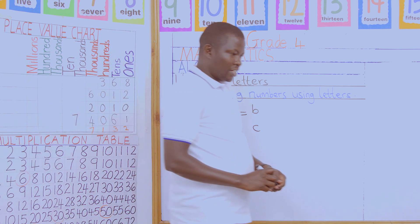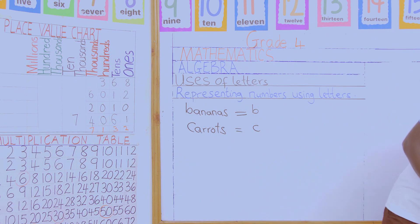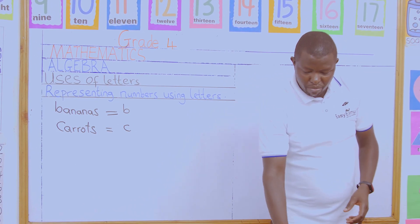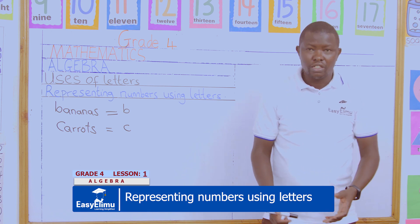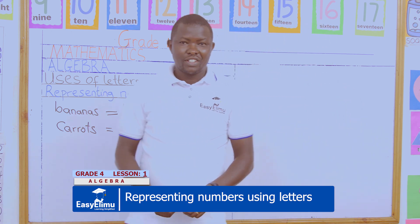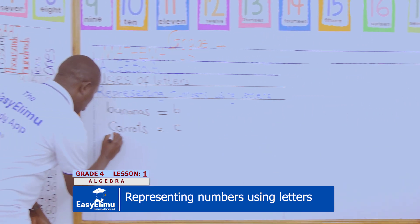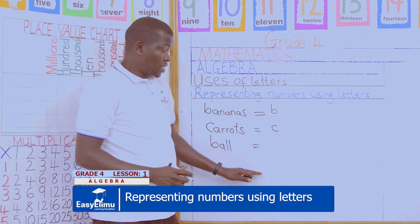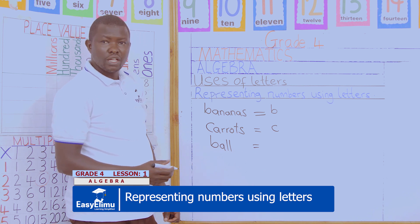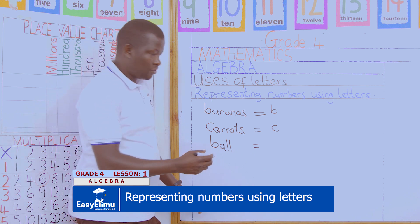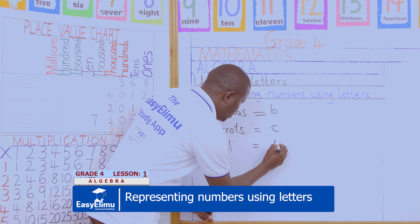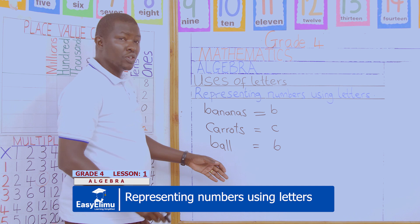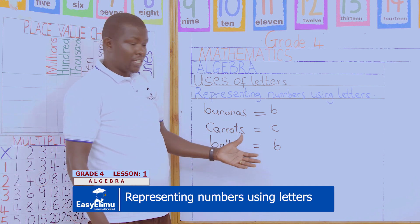Now in our activity, I would like us to represent a ball using letters. So we will write: the ball — we will represent it using a letter. For example, let us choose letter B for balls, whichever letter we choose. That is how we use letters — the use of letters to represent objects.